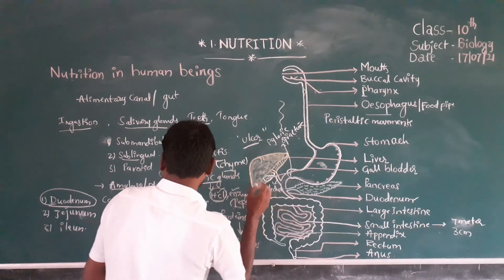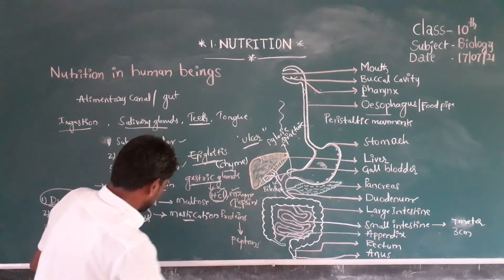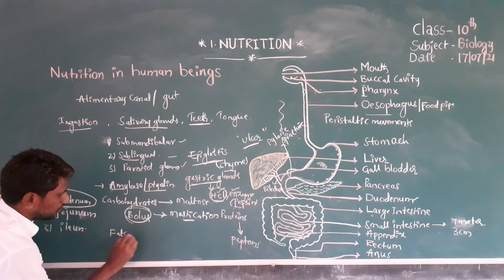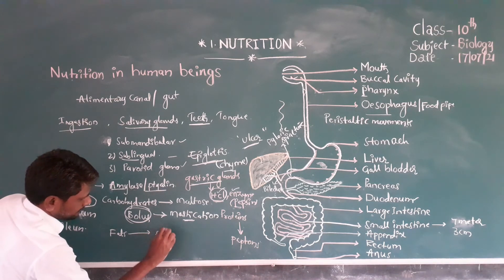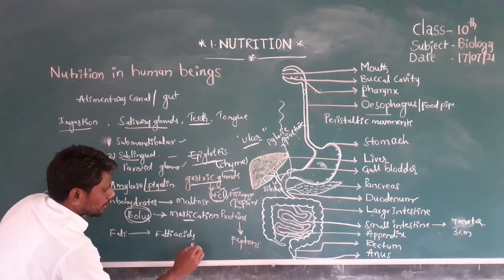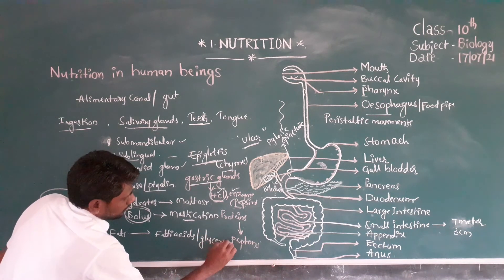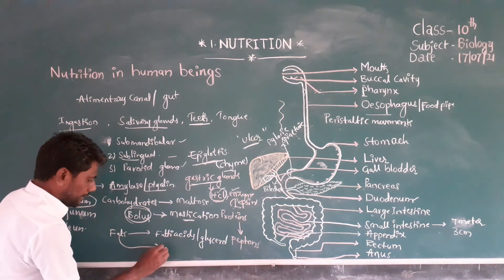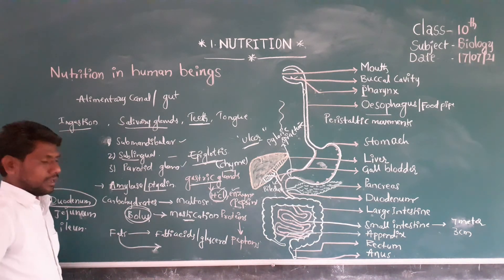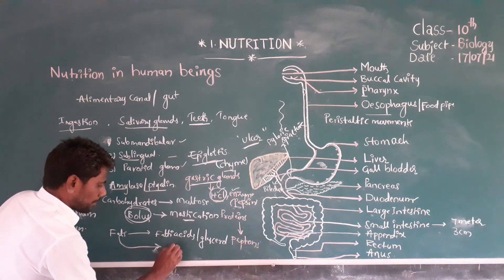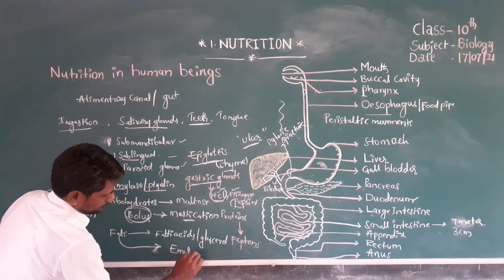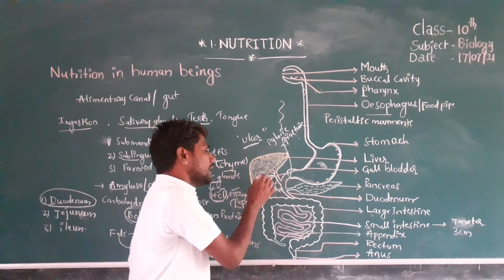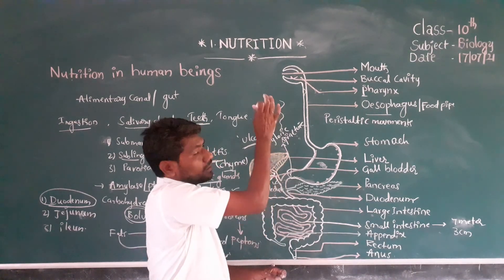The bile juice converts fats into fatty acids and glycerol — that is, the fat molecules are broken down into small globule-like forms. This process is called emulsification. The liver is the largest mixed gland in the human body.